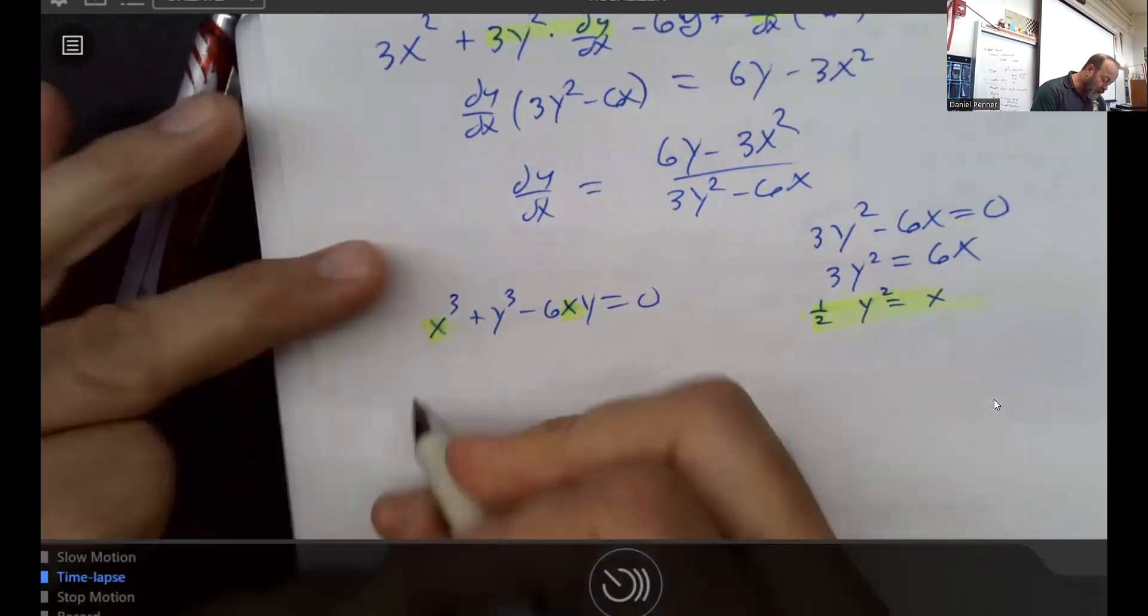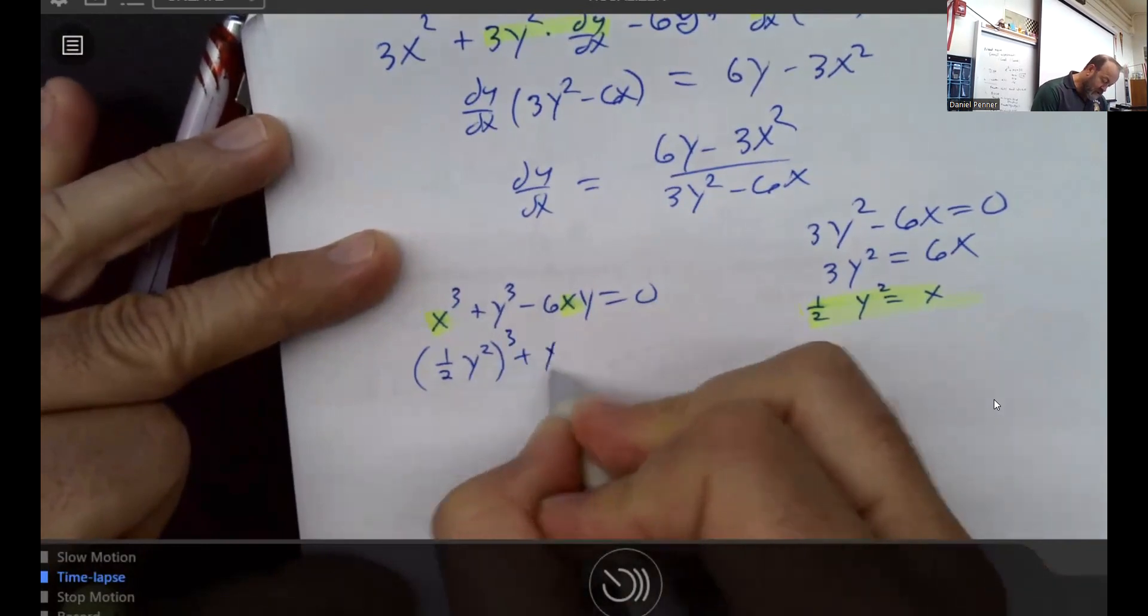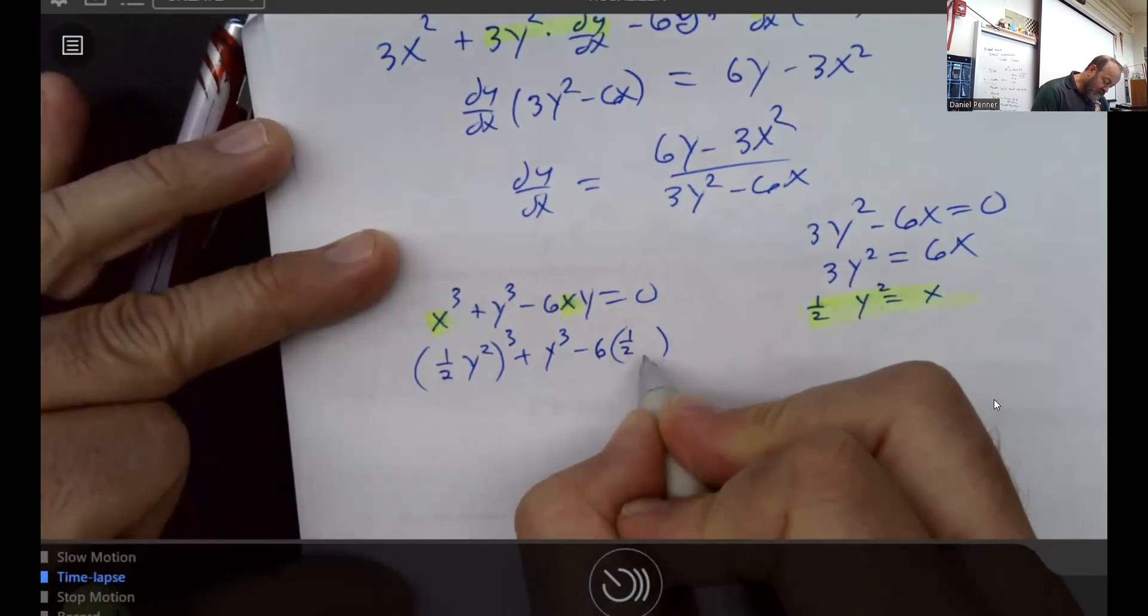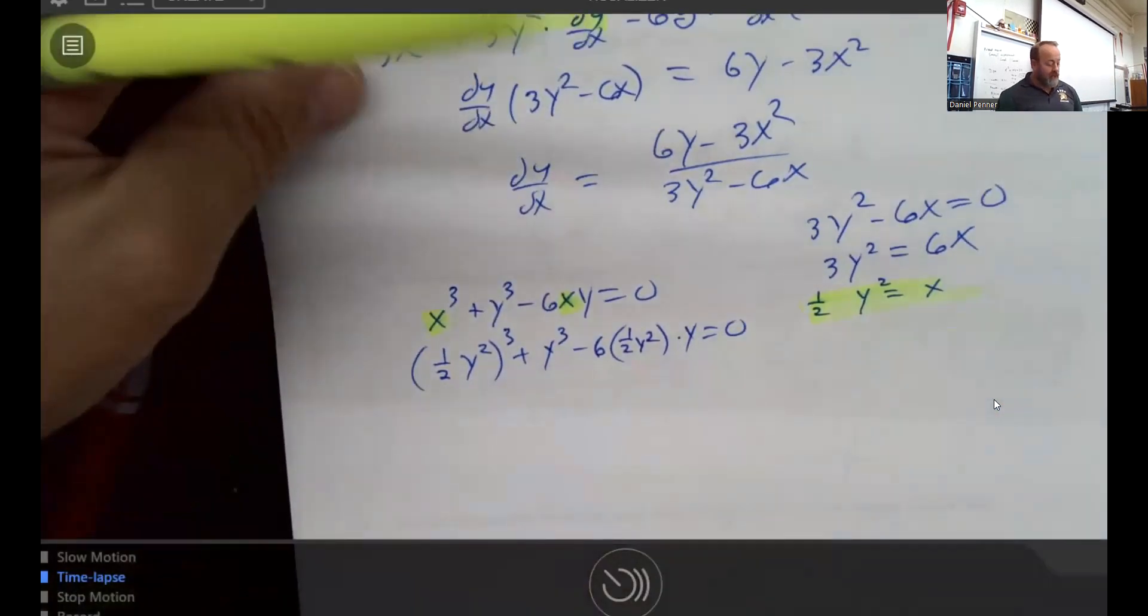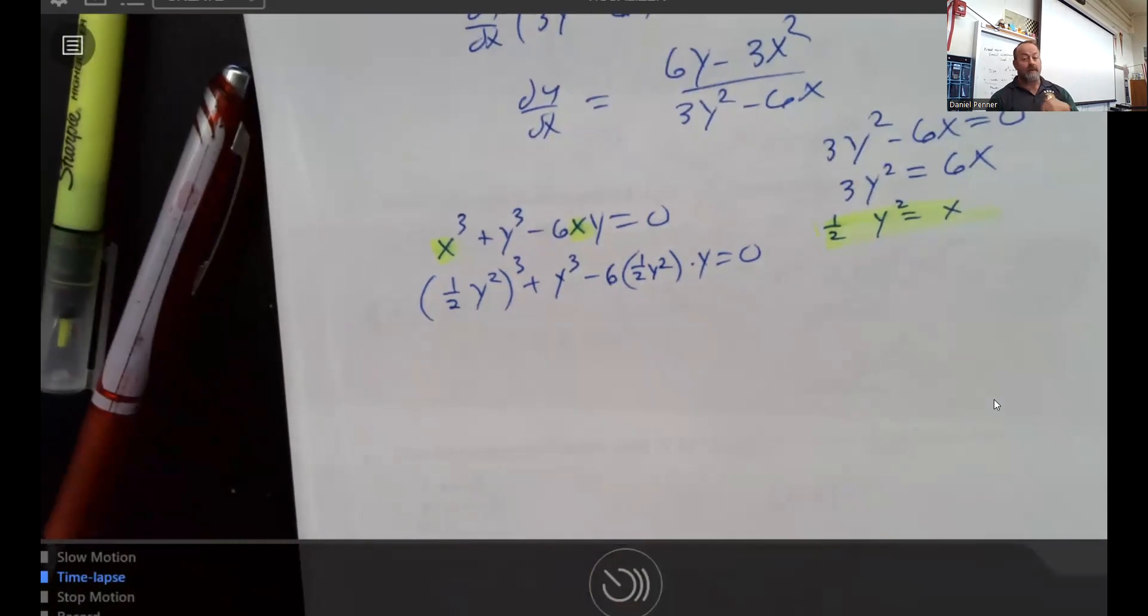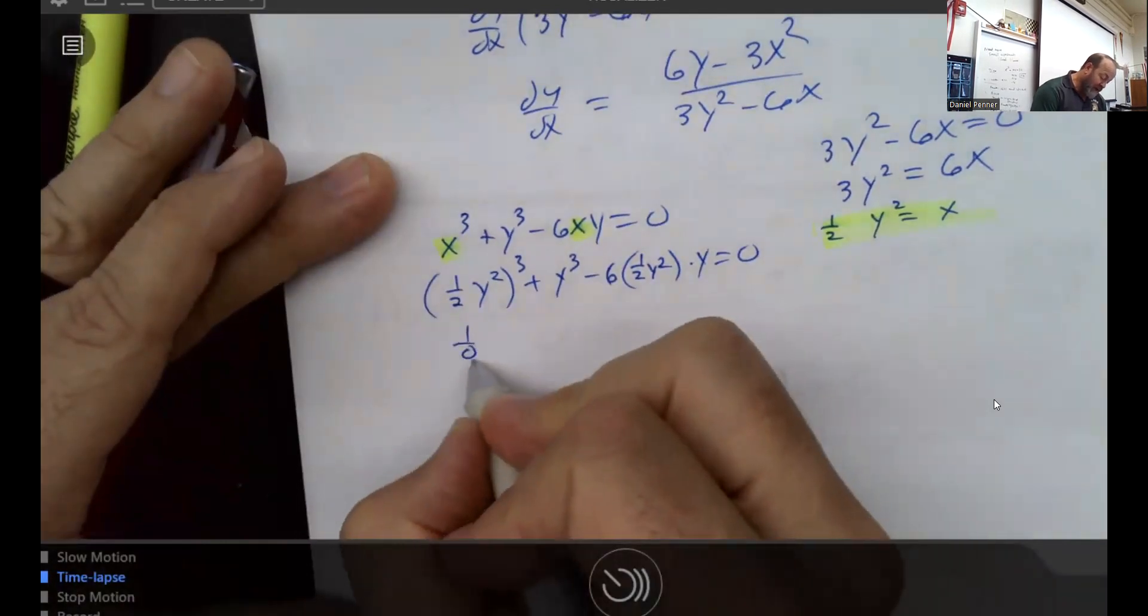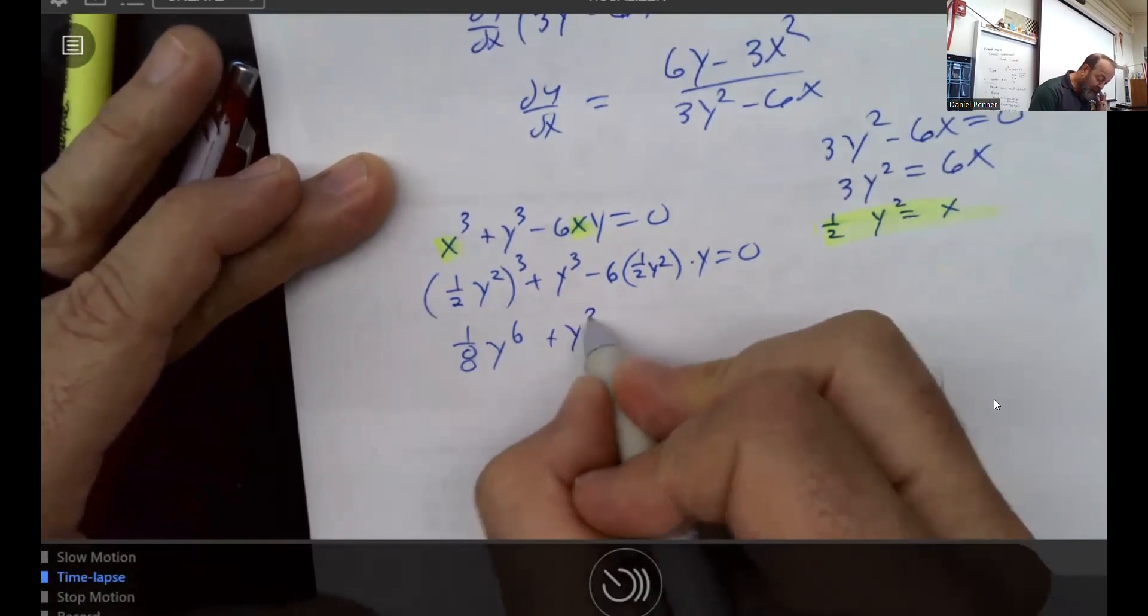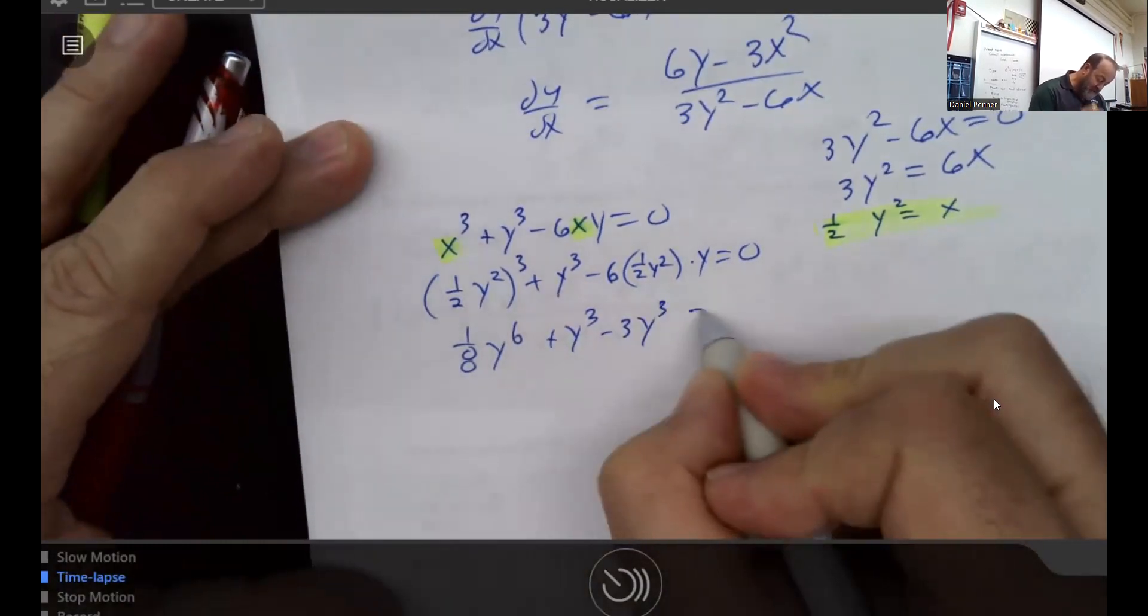So I'm going to take (1/2)y² and cube it. I'm going to take (1/2)y² and multiply it by y, and somehow that's going to be 0. Now that may look like it's going to get really tough. And it turns out this problem is going to come together fairly well. I've got (1/8)y⁶, be careful, plus y³ - 3y³ would still be 0.